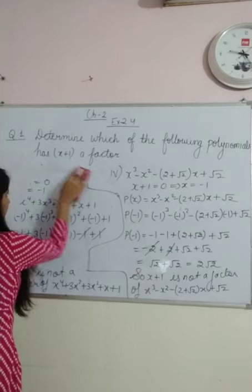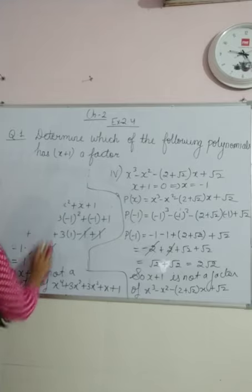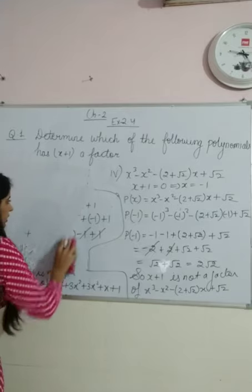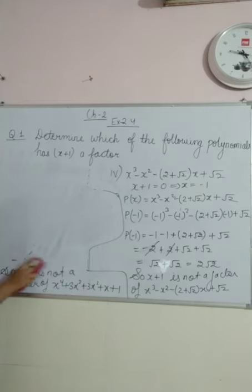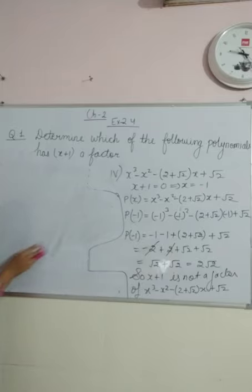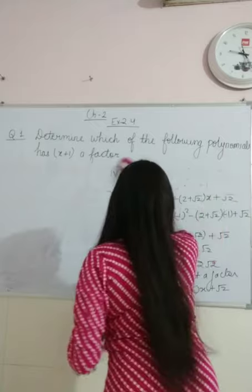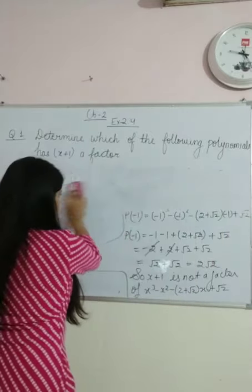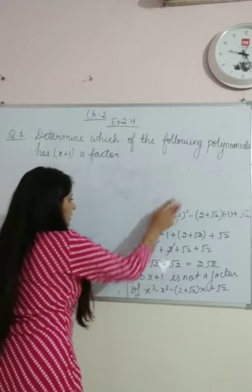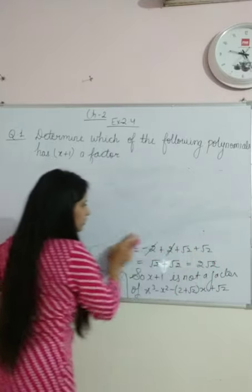Simple remainder theorem यह है: जब भी हम कोई polynomial में दूसरे polynomial को equal to 0 रखके हमारा answer निकालते हैं, तो जो answer आता है वो remainder होता है। और remainder 0 रहने से उसका multiple है — हम दोनों चीजें देखते हैं: multiple के लिए और factor के लिए, 0 आए तो factor या multiple है, और 0 नहीं आया तो नहीं है।